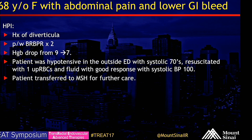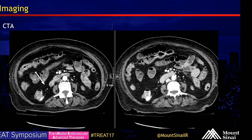What we have done so far is a diagnostic angiogram of her SMA. We had already localized the bleed to the right side of the colon, and we were able to do a cone beam CT. It shows the area of the bleed in the right colon as well as the vessel that is bleeding up to it.